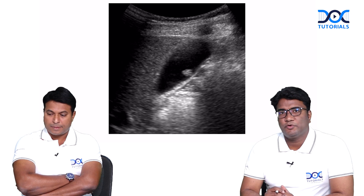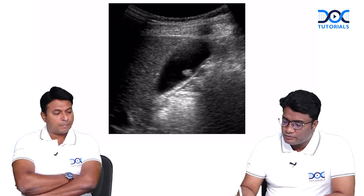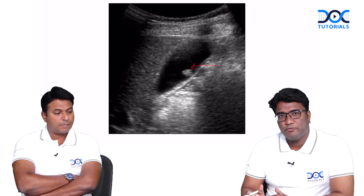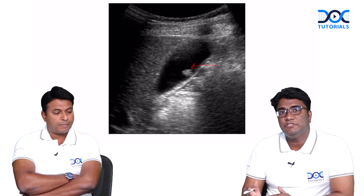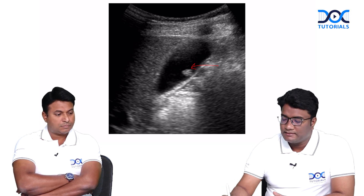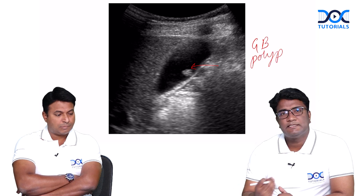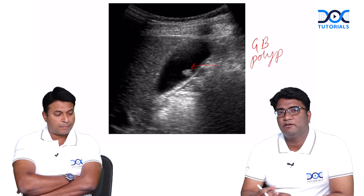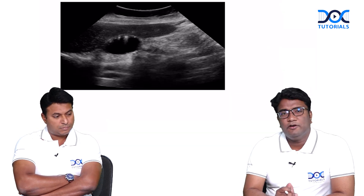What do you think is this next image showing? Here also, within the lumen of the gallbladder you see a slightly hyperechoic area, but do you see a classic shadow with it? No. So this is how you have GB polyps. When you don't have the classic posterior acoustic shadowing, this is a GB polyp — a soft tissue area projecting into the lumen of the gallbladder without any posterior acoustic shadowing.